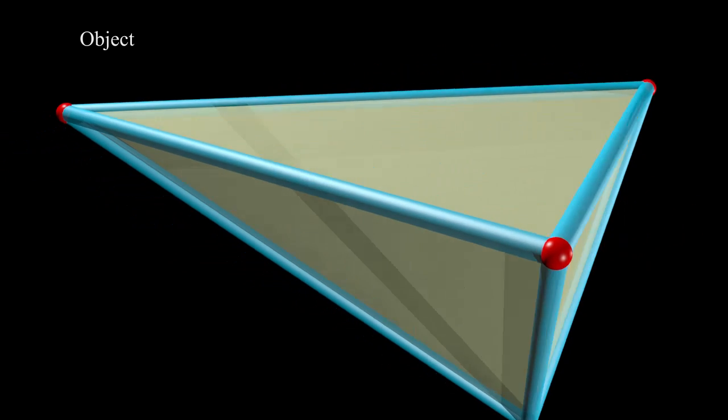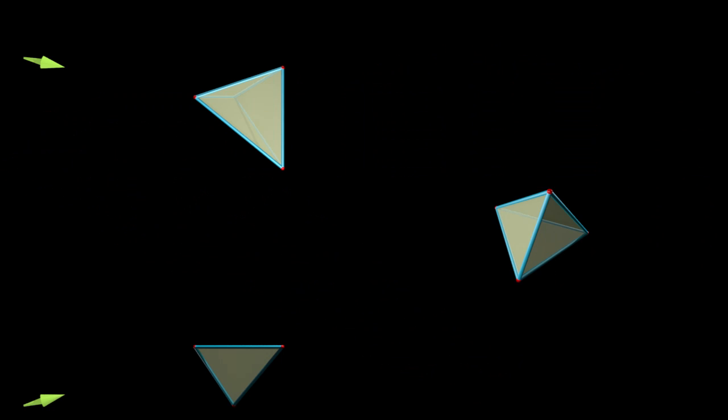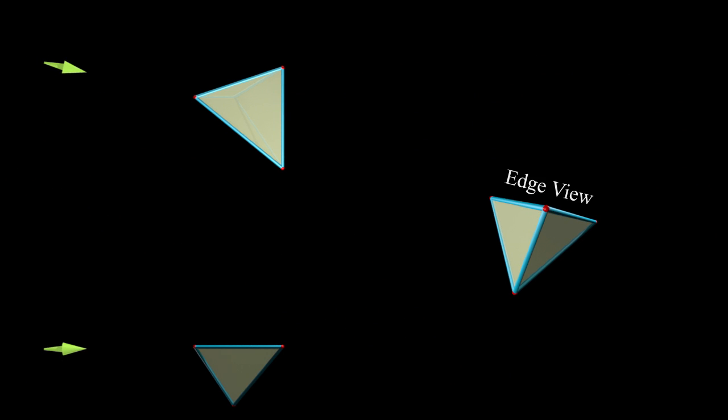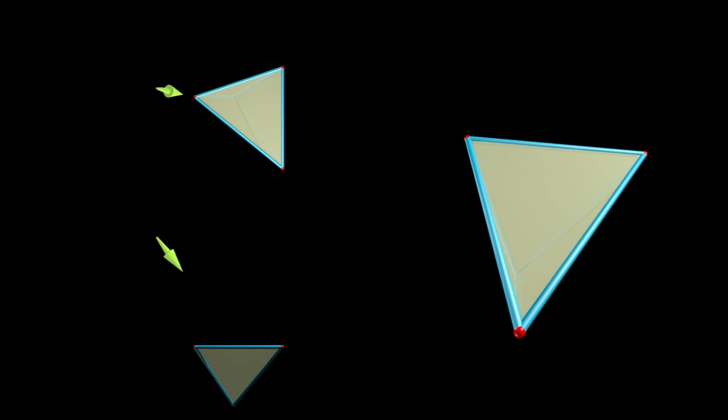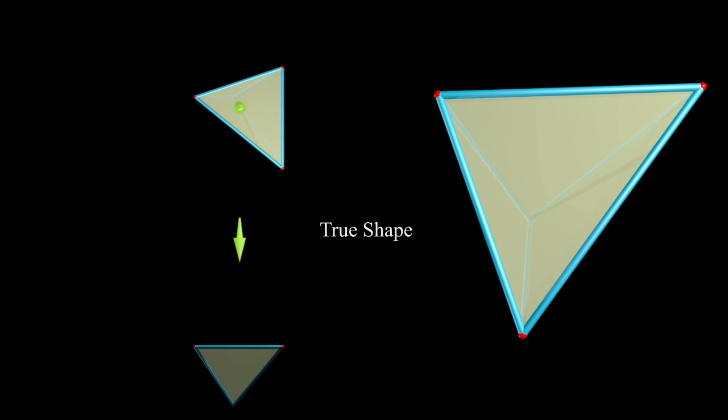If we add a fourth point, we get an object. By changing our view, we can get an edge view, and if we keep going to where we're perpendicular, we can get a true shape view.